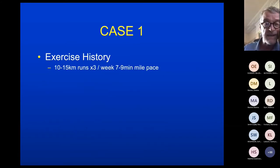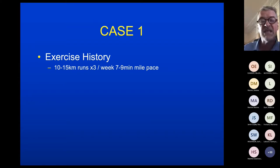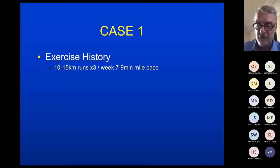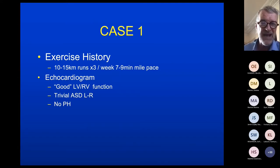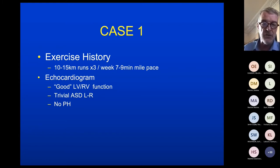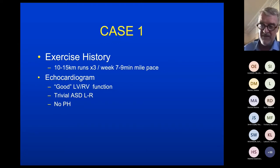His exercise history at age 26: he was running 10 to 15 kilometres three times a week at seven to nine minute mile pace — fairly respectable. His echo showed good biventricular function, a small ASD with a bit of left to right flow across it, no right heart overload, no pulmonary hypertension, no real indication for treatment. He was advised not to scuba dive and very little else.